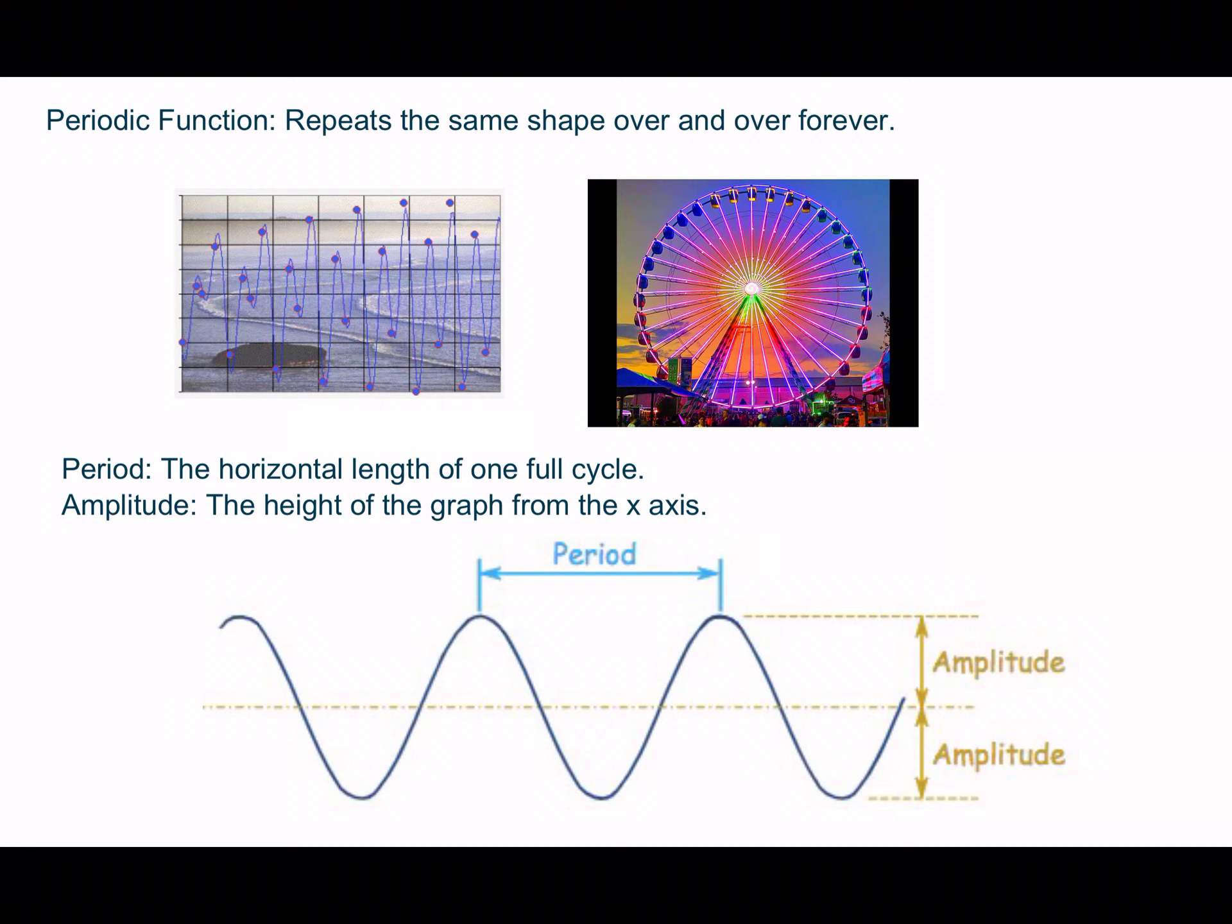The period is the horizontal length of one full cycle. So notice in my example down here at the bottom, I have this wave that keeps going on and on forever. It starts right here at the top and it repeats that same shape. Notice how it's kind of making a smiley face.